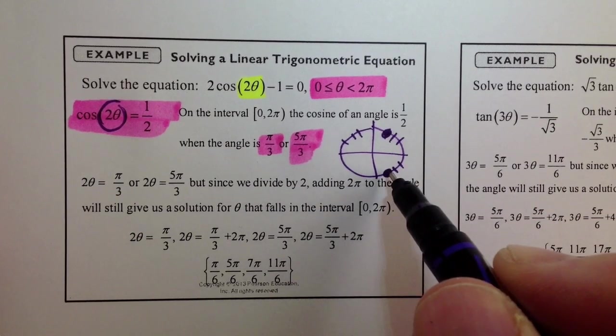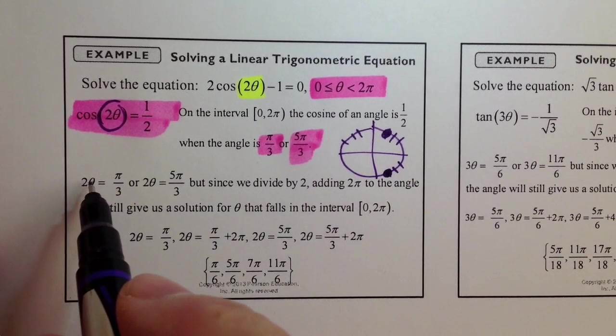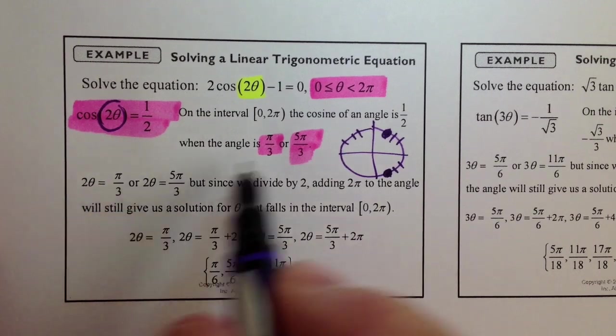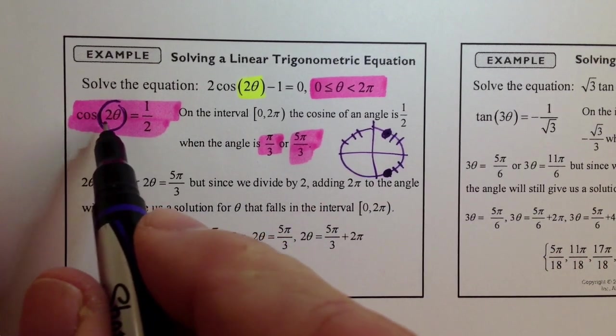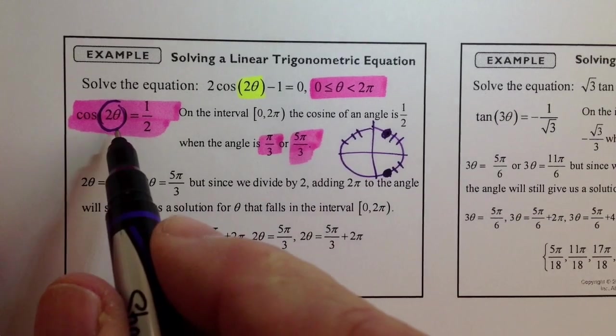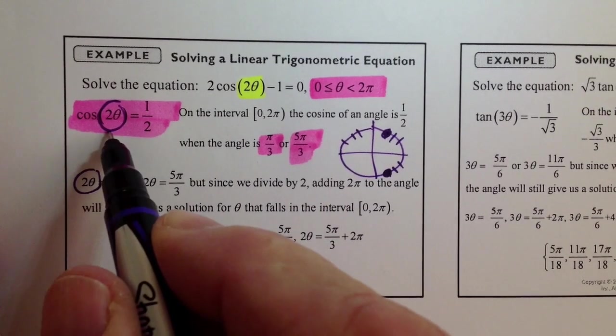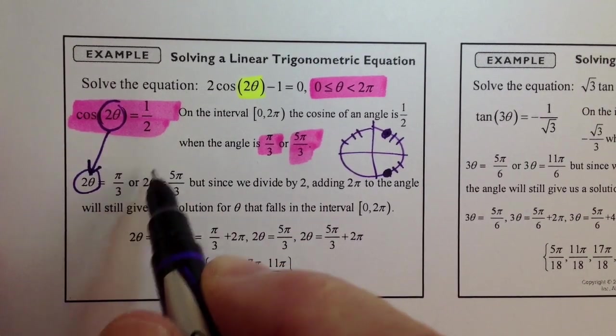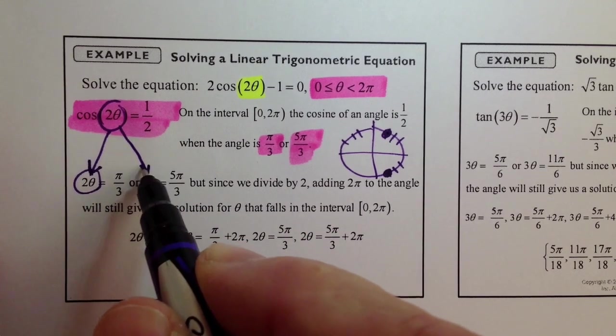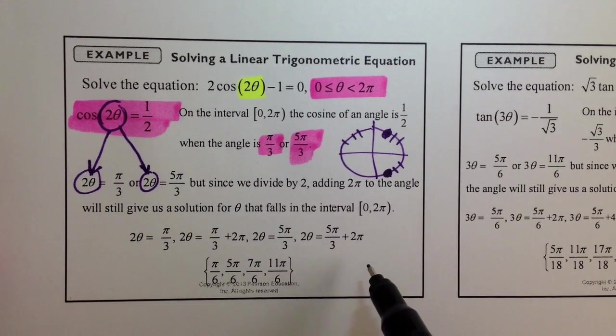So, that's great. Well, we know that 2 theta is equal to pi over 3 because that's the angle. The cosine of the angle is 1 half, so that angle, whatever it is, has to be pi over 3 or that angle has to be 5 pi over 3.